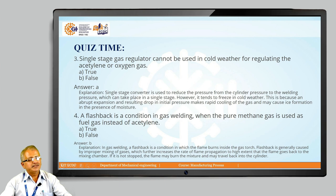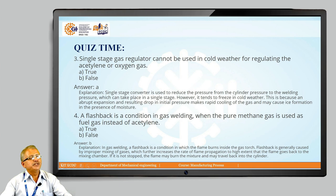The third question — a single-stage gas regulator cannot be used in cold weather for regulating acetylene or oxygen gas. True or false? The answer is true. A single-stage converter reduces pressure from cylinder pressure to welding pressure in a single stage and tends to freeze in cold weather, because the abrupt expansion and resulting drop in initial pressure causes rapid cooling of the gas, which may cause ice formation in the presence of moisture.